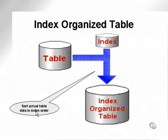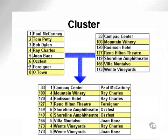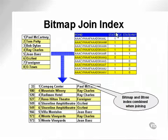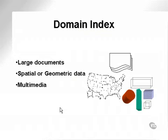An index-organized table combines a table plus index into a single structure, sorting the actual table data in the order of the index. A cluster is a join between multiple tables placed into a single physical object. A bitmap join index takes the same bitmap we had earlier and joins it with a non-bitmap table or index to get a result. A domain index is used for large documents in a library, spatial geometric data like maps and representations of objects, as well as multimedia such as video and sound.